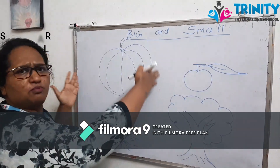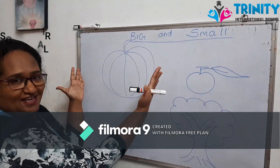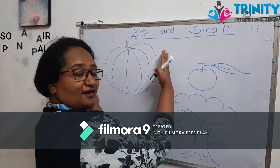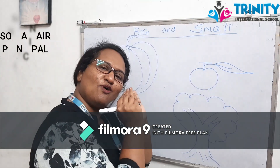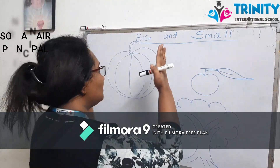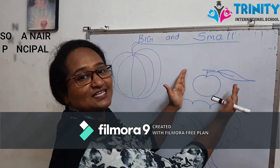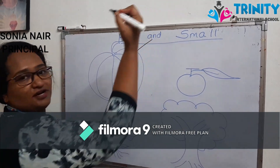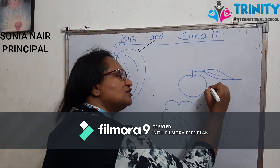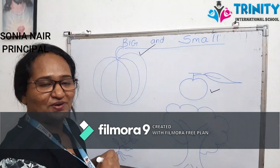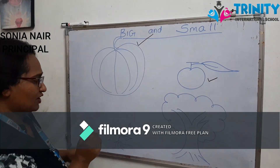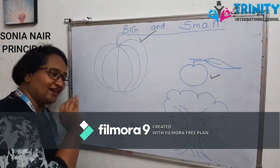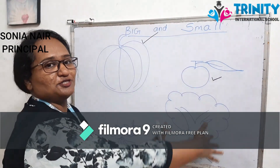What is this? Pumpkin! This is a pumpkin — bahot bada, it's big. And an apple — an apple is small. Big and small: this is big and this is small.